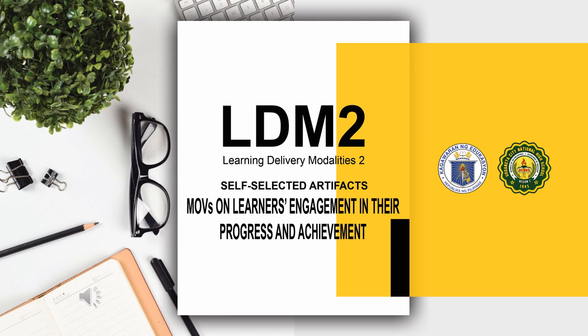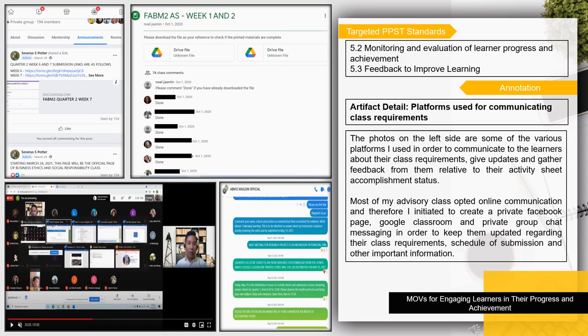The following slides contain the artifacts on means of verification on learner engagement in their progress and achievement. The targeted PPST standards are 5.2 Monitoring and evaluation of learner progress and achievement, and 5.3 Feedback to improve learning. The artifacts highlight the platforms I used to communicate class requirements, give updates, and gather feedback from learners relative to their activity sheet accomplishment status. Most of my advisory class opted for online communication, so I created a private Facebook page, Google Classroom, and a private group chat to keep them updated on class requirements, submission schedules, and other important information.